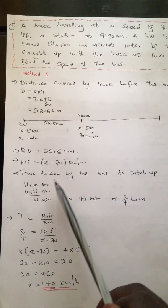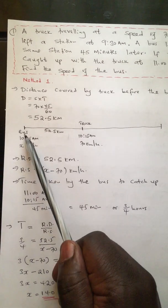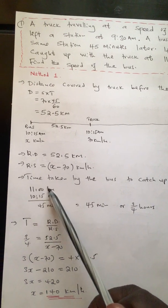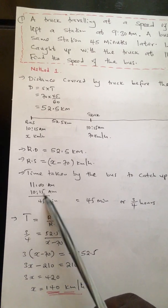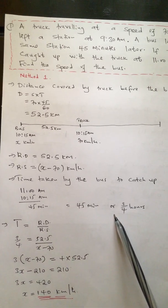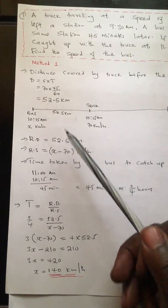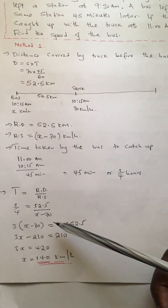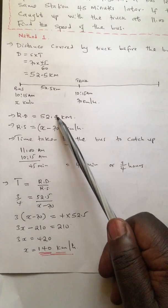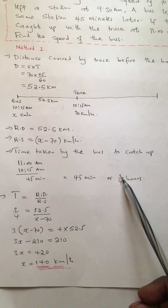The time taken by the bus to catch up with the truck: the bus left the station at 10:15, and it caught up at 11. So the time taken is 11 minus 10:15, which is 45 minutes. Converting 45 minutes to hours gives 3 over 4 hours. So at this point, we have the relative distance, the relative speed with an unknown x, and the time taken for the two bodies to catch up.